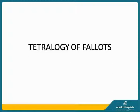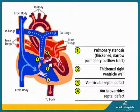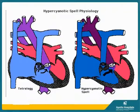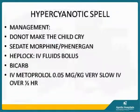Tetralogy of Fallot is a decreased pulmonary blood flow cyanotic heart disease with four components: pulmonary stenosis, thickened right ventricular wall, ventricular septal defect, and aortic override. During a hypercyanotic spell, RVOT obstruction increases and more deoxygenated blood enters the aorta. Management of a hypercyanotic spell includes avoiding making the child cry further, sedating with morphine and phenergan, placing an IV line, giving a bolus of fluids (most useful), IV sodium bicarbonate 1 ml/kg, and IV metoprolol 0.05 mg/kg slowly over half an hour, which has replaced propranolol.